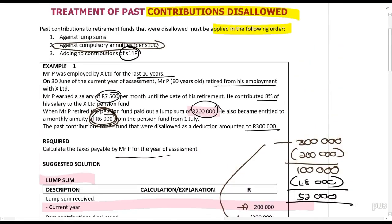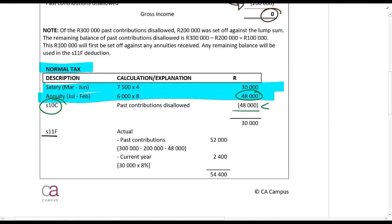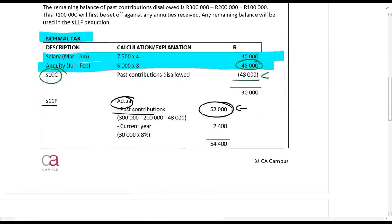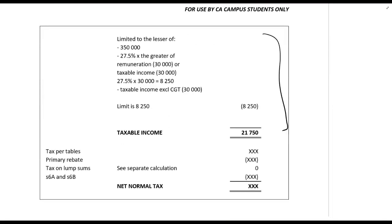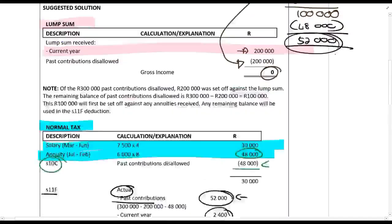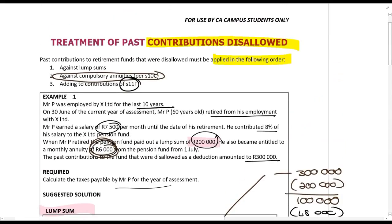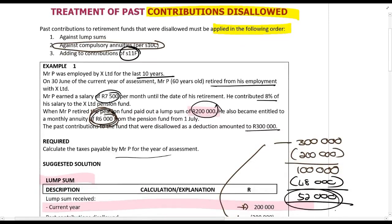That fifty-two thousand rands goes to section 11f. Under section 11f, the actual contributions include the past contributions — that fifty-two thousand rands that is left — plus the current year contributions, and then you complete the calculation as usual. Please make sure you understand the order in which to apply past contributions disallowed, as this is an area where there has been some confusion due to recent changes. This is the current recommended approach, and you can find it referenced in section 10c.